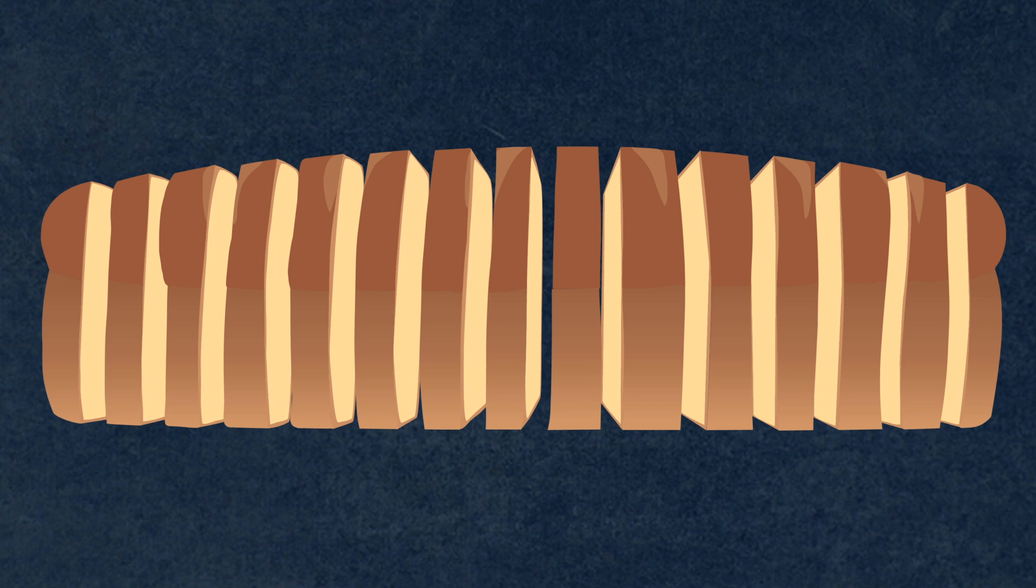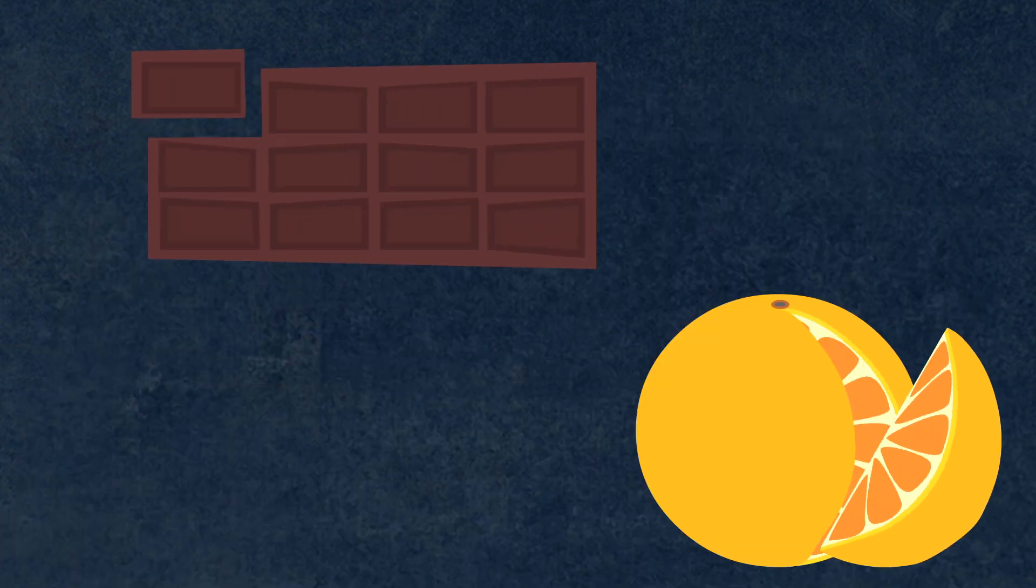Other examples of partitioned units include a square of a chocolate bar, a section of an orange, and a slice of pizza.